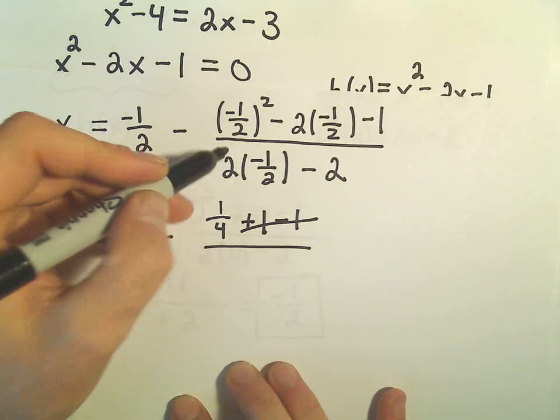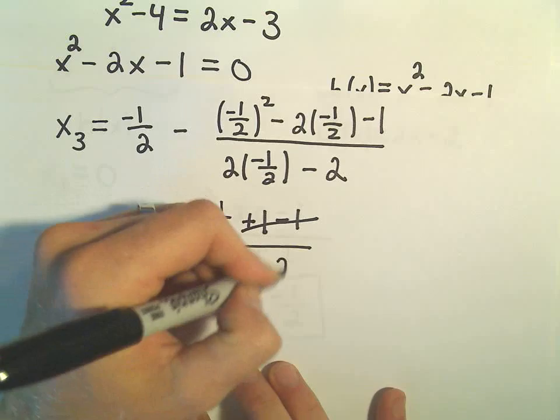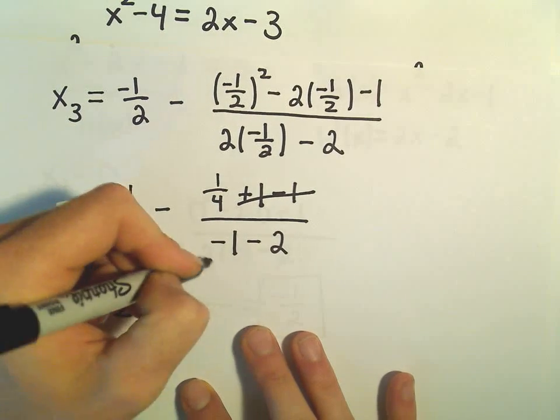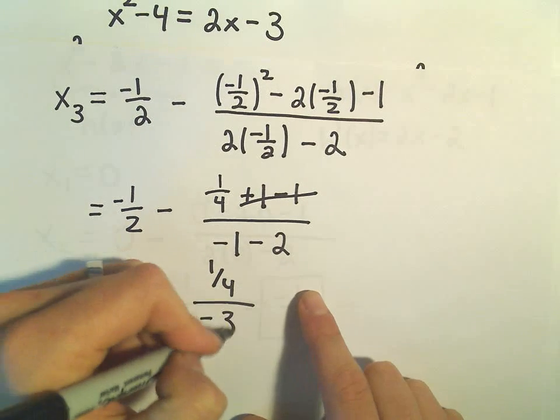It looks like we would have, so 2 times negative 1 half would be negative 1, still minus 2. So we've got negative 1 half, we've got 1 fourth on the top. I guess we'll have negative 3 in the denominator.